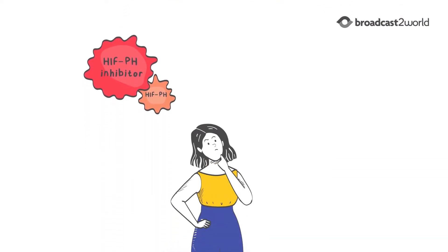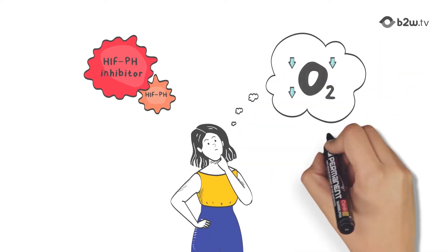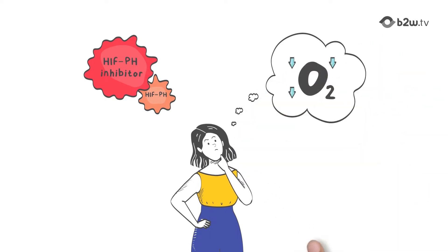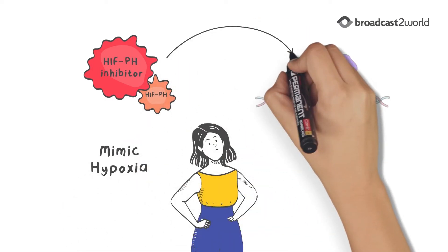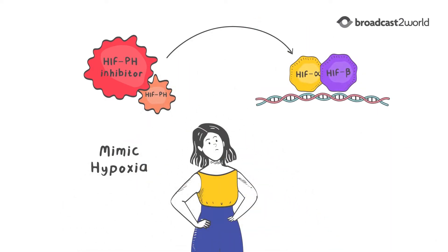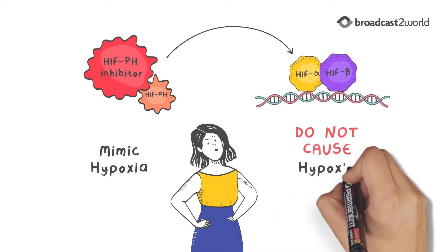If HIF-PH inhibitors mimic hypoxia, doesn't this mean they limit oxygen and cause hypoxia? No. HIF-PH inhibitors mimic the body's natural coordinated erythropoietic response to hypoxia, but they do not cause hypoxia.